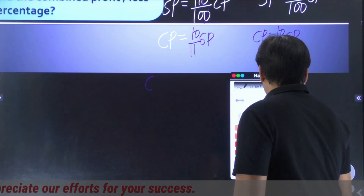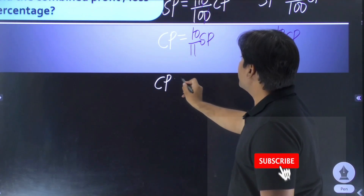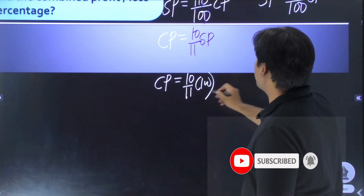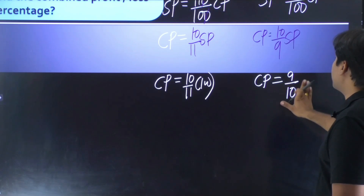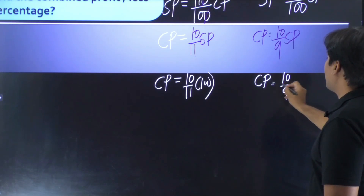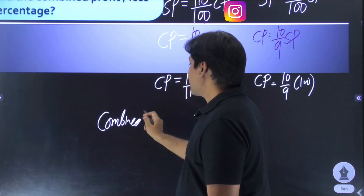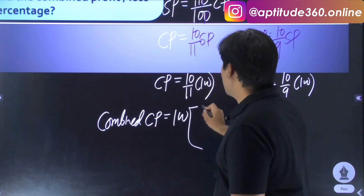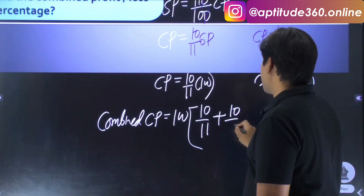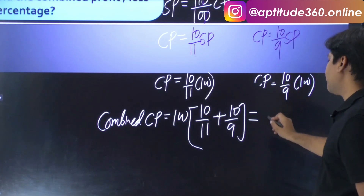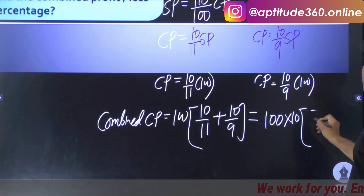With SP equal to 100 rupees, the CP in the first case is 10/11 of 100 rupees, and in the second case it is 10/9 of 100 rupees. The combined cost price, taking 100 common, is 100 times (1/11 + 1/9). Taking 10 as a factor further simplifies this, and the combined cost price comes out as 2000/99 rupees.